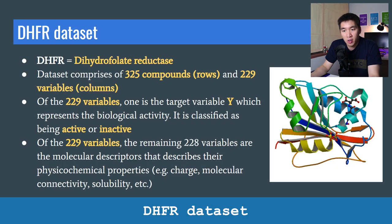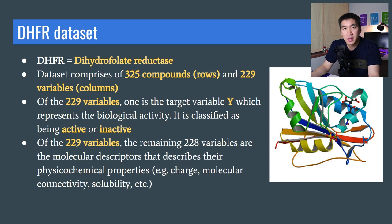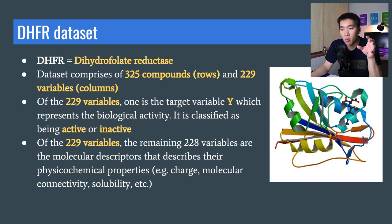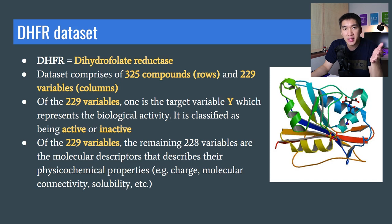Today we're going to use the DHFR dataset. DHFR stands for dihydrofolate reductase — it is an enzyme and also an anti-malarial drug target. The dataset is comprised of 325 compounds (rows) and 229 variables (columns). One of those variables is the target variable called Y, which represents biological activity and can be classified as either active or inactive.